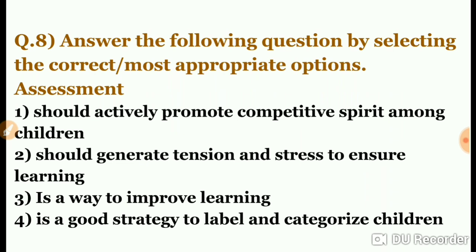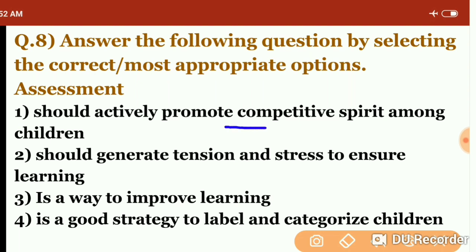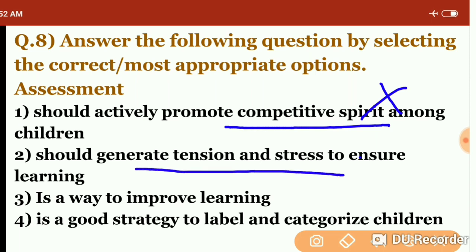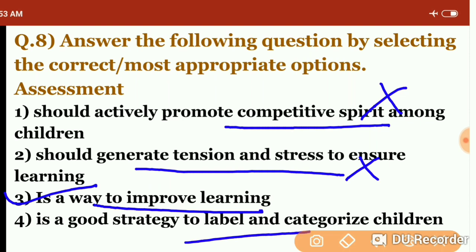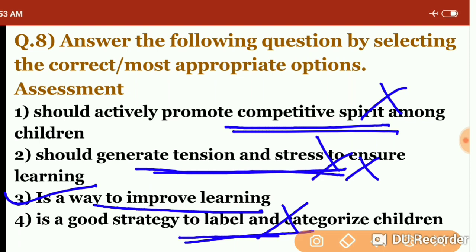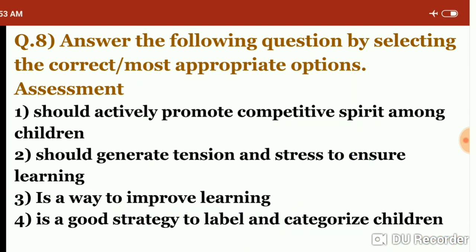Question eight: assessment should — actively promote competitive spirit among children; generate tension and stress to ensure learning; be a way to improve learning; or be a good strategy to label and categorize children. Competitive spirit is not the goal, generating stress is not assessment's purpose, and labeling is not our aim either. The main purpose of assessment is to improve learning. So the third option is correct.